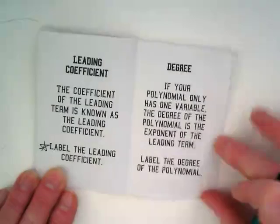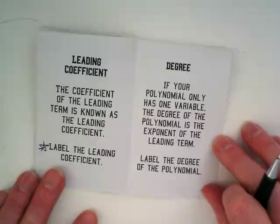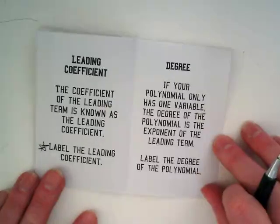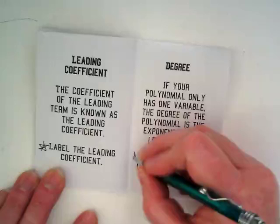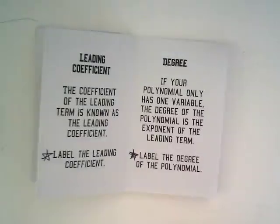And finally, degree. If your polynomial only has one variable, the degree of the polynomial is the exponent of the leading term. We will label, or really we're going to make a list and identify, the degree of the polynomial.